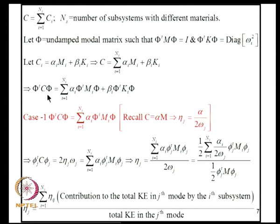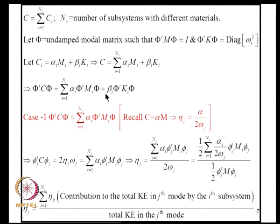Now if we consider phi^T C phi, we must note that phi^T M_I phi will not be diagonal, because M_I is simply a contribution to the total mass matrix from the ith subsystem — similarly for K_I. Let us first consider the case where all beta_I's are zero, meaning each subsystem has mass-proportional damping only.